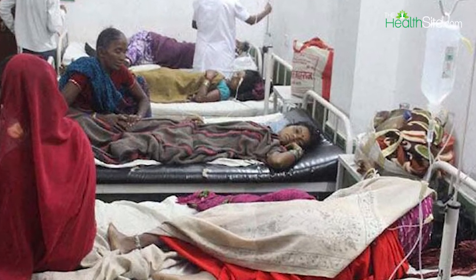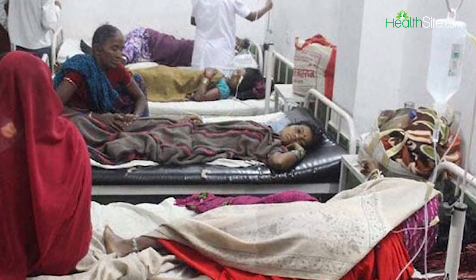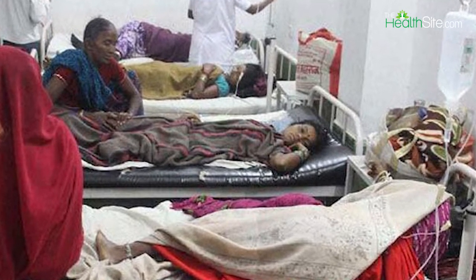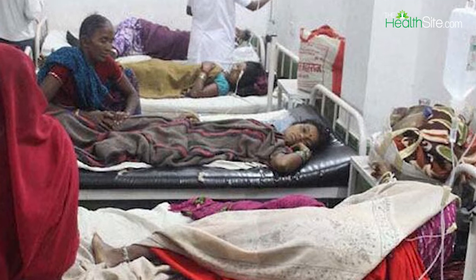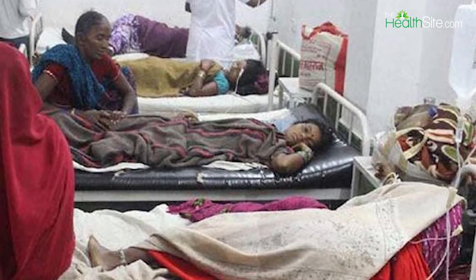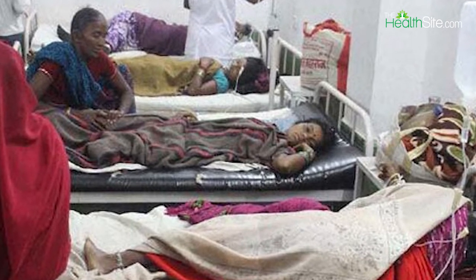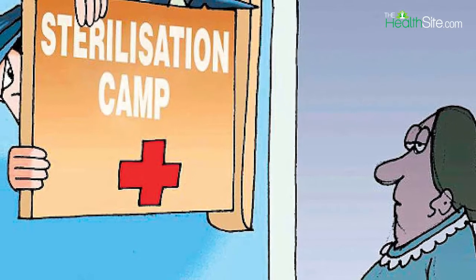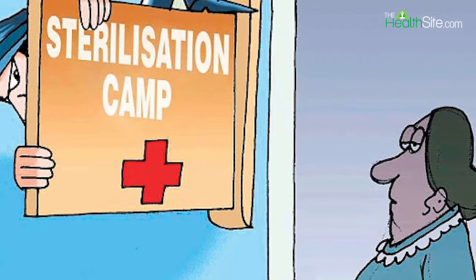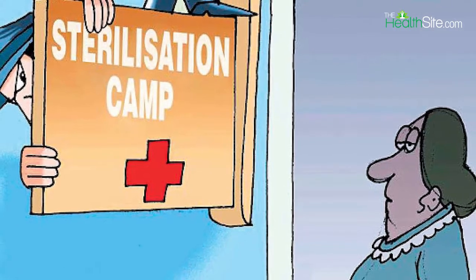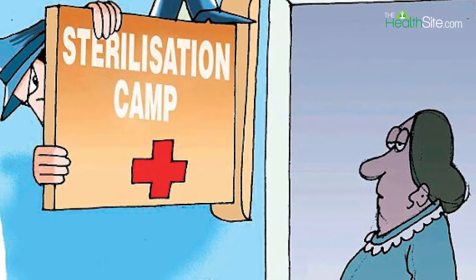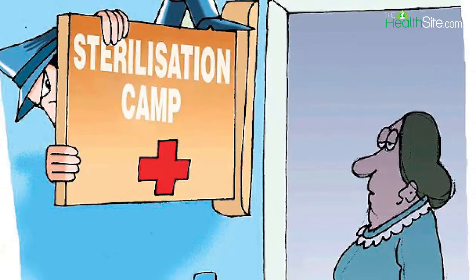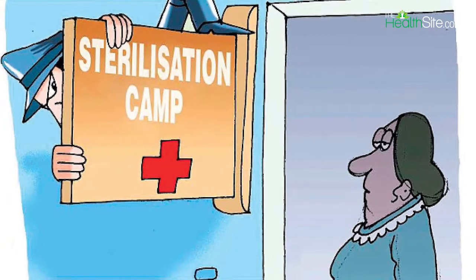Two women who underwent surgeries at the tubectomy camp held in a civil hospital in Telangana have died of post-surgery complications. The Director of Public Health said a total of 34 patients underwent the operation, out of whom 30 have been discharged and are in a stable condition.